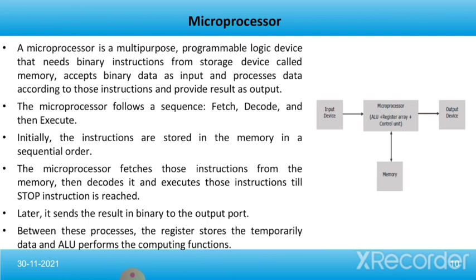Now let's move forward and talk about the microprocessor. A microprocessor is a multipurpose programmable logic device that reads binary instructions from a storage device called memory, accesses binary data as input, and processes it according to those instructions to provide a result as output. The processor follows the sequence: fetch, decode, and then execute. Initially, instructions are stored in memory sequentially. The microprocessor fetches those instructions, decodes them, and executes them until a stop instruction is reached, then sends the result in binary to the output port. During this process, registers store temporary data and the ALU performs computing functions.